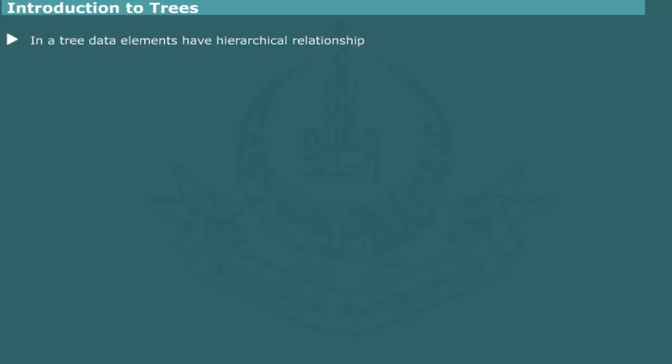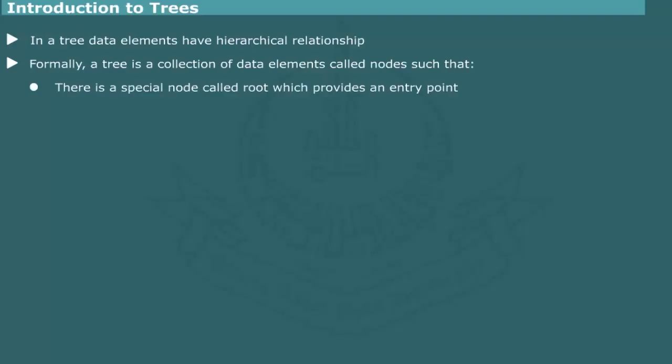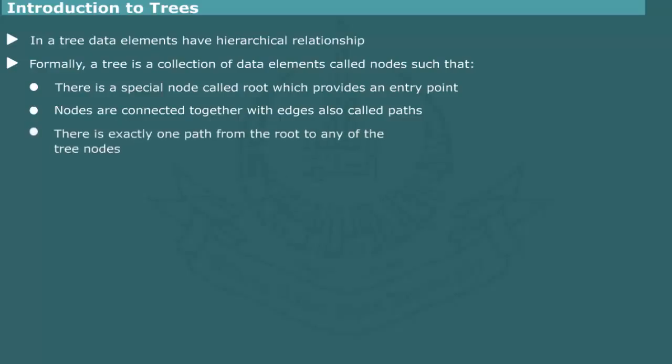A tree is a data structure in which data elements have a hierarchical relationship. There are several ways of describing the internal structure of a tree. Formally, we can define a tree data structure as a collection of data elements called nodes such that the collection has a special node called root, which provides an entry point to the tree data structure. The nodes are connected together with edges or paths. There is exactly one path from the root to any node in the tree.